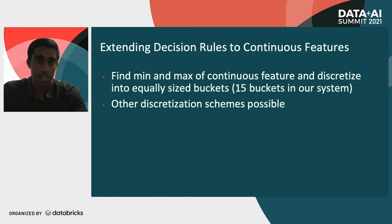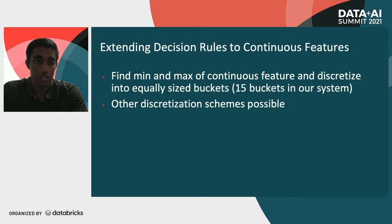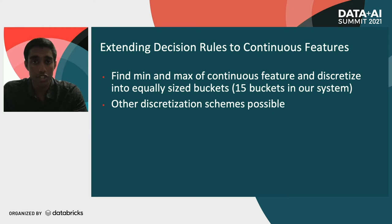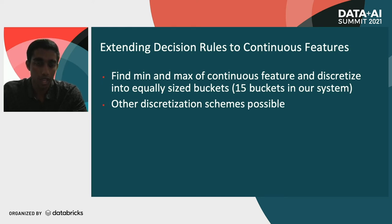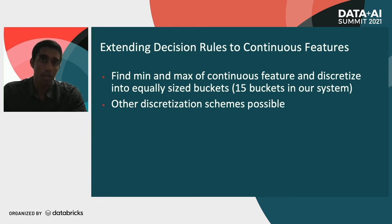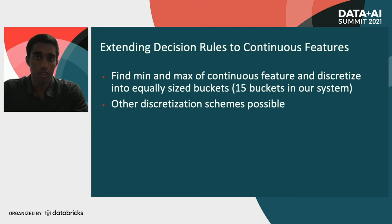As an aside, we can extend decision rules to continuous features — ones that have a continuous range of values instead of a fixed number of distinct values. We find the min and max of the continuous feature range and discretize that range into 15 equally sized buckets. We chose 15 because it works well in practice and also helps with hardware acceleration. Other discretization schemes are possible and could be a future direction.